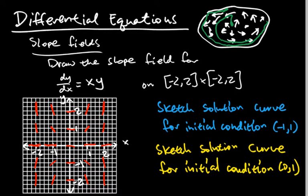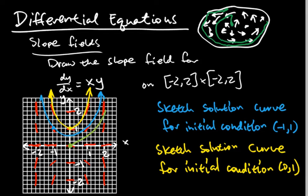Now let's discuss solution curves. For initial condition negative 1 comma 1: starting there, because the field is symmetrical, you get a parabola-like shape. For initial condition 0 comma 1, you still get a parabola, just a slightly different one. If we start at 0 comma 0, going right makes the curve go up and going left makes it go down — a cubic-looking behavior. So the behavior differs depending on where you start.